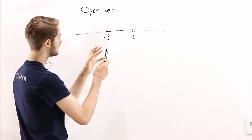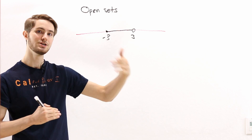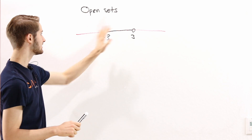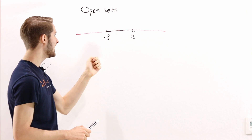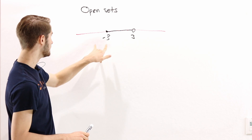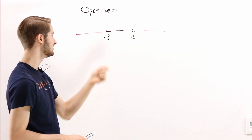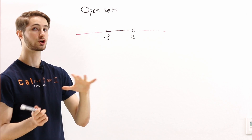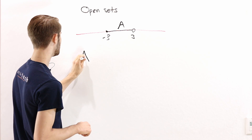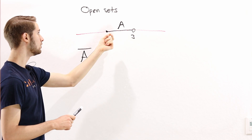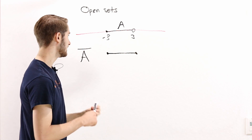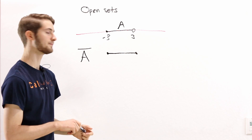The boundary of a set is the edge — the stuff that sits at the very outside. For this set, the boundary points seem like they should be negative three and positive three. In this case, negative three is in the set, but positive three is not. The idea of the closure is that if we have a set A, the closure Ā takes the set and also includes the boundary points. So the closure should be the set from negative three to three, including the point positive three on the boundary.